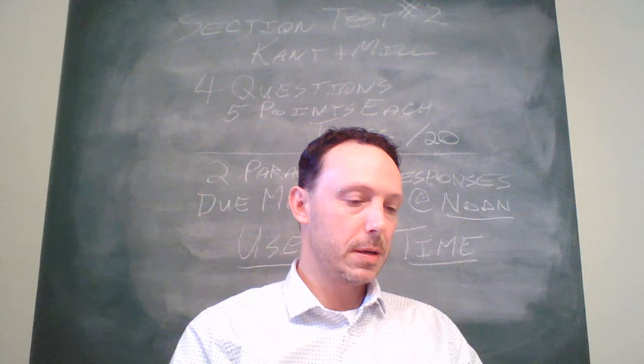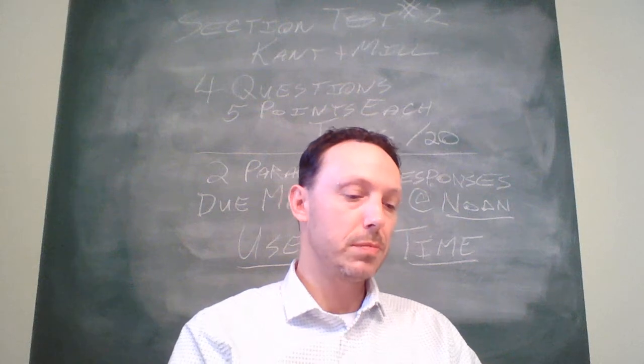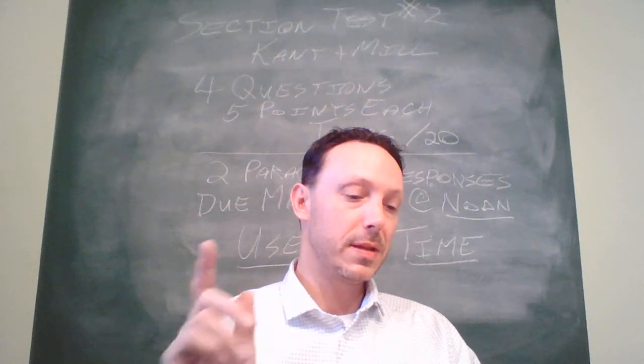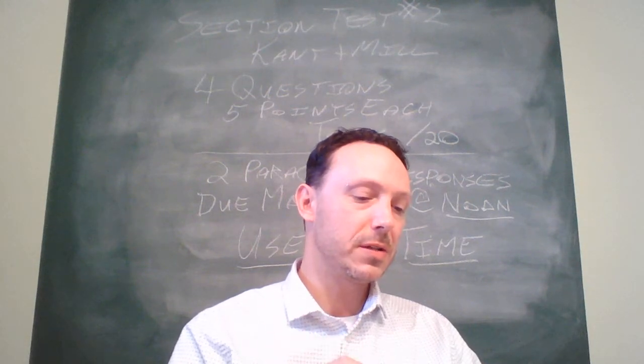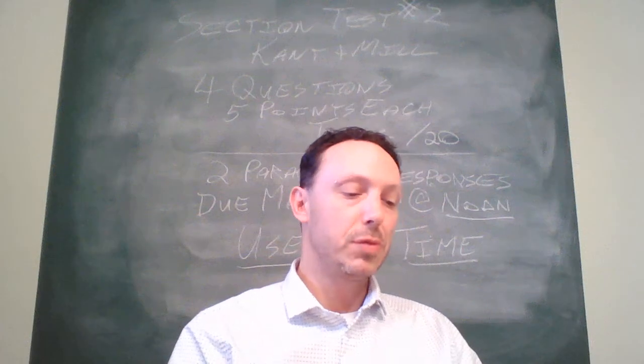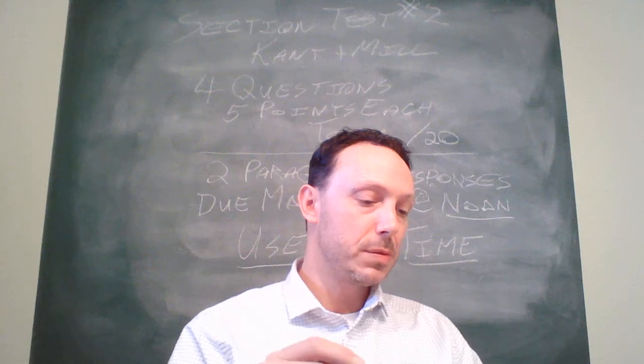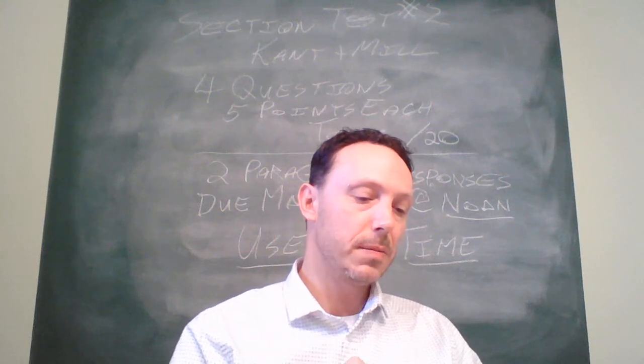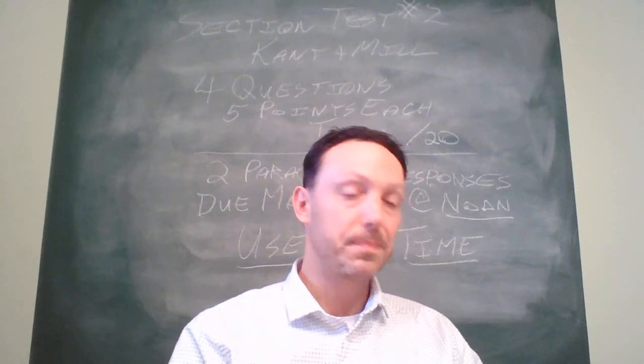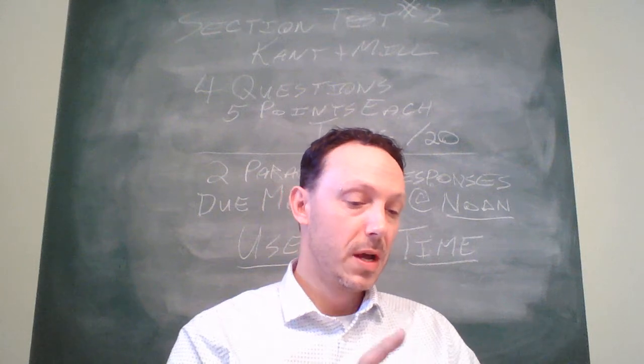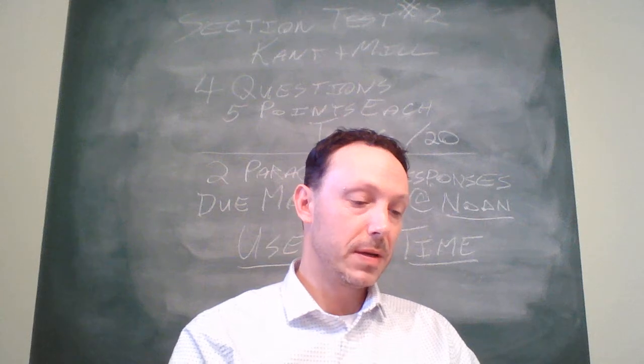Okay. Kant question, the second one. Kant introduces the humanity principle, quote, act in such a way that you treat humanity, whether in your own person or the person of another, always as an end in itself and never merely as a means. He introduces this principle as another formulation of the categorical imperative. This principle, he argues, rests on the dignity of human beings. He argues that human beings are, quote, objects of respect. That's on your page 36. Why are human beings, according to Kant, quote, objects of respect? Right? That's the first question.